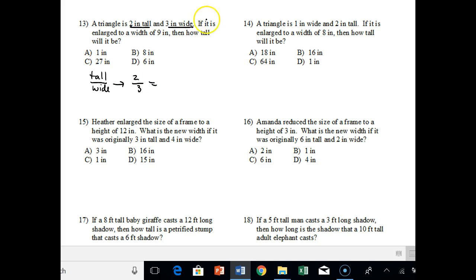And our first ratio they gave us was 2 inches tall over 3 inches wide. Equals, if we keep reading, it says if its width, width is enlarged to 9 inches. So wide was on the bottom. So 9 should go on the bottom. And x should go on top.